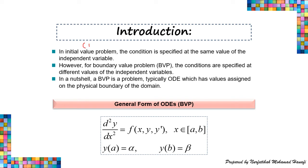In an initial value problem, or IVP, the condition is specified at the same value of the independent variable. However, for a boundary value problem, the conditions are specified at different values of the independent variable. The general form for an ODE boundary value problem is: d²y/dx² = F, with conditions y(A) = alpha and y(B) = beta.